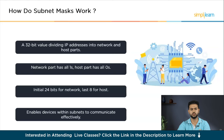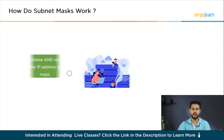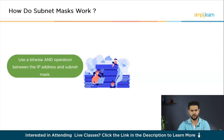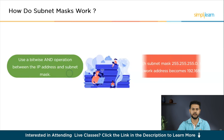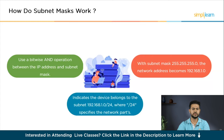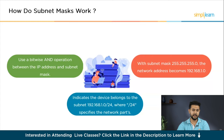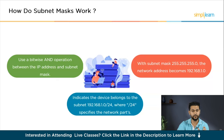To apply a subnet mask to an IP address, a bitwise AND operation between the two numbers is performed. For example, if the IP address is 192.168.1.100 and the subnet mask is 255.255.255.0, the resulting network address is 192.168.1.0. This signifies that the device is part of subnet 192.168.1.0/24, where the /24 denotes the number of bits allocated to the network part.